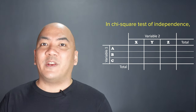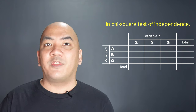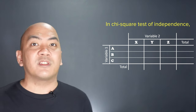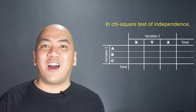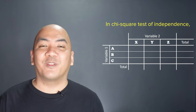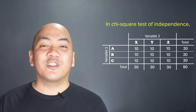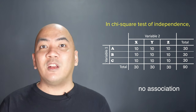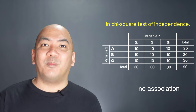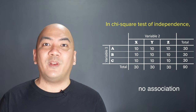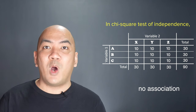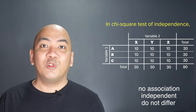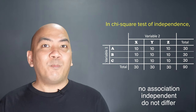Suppose we have two variables — variable 1 and variable 2 — in which both have three possible distinct outcomes. We may summarize it using a 3x3 cross-tabulation. If all the observed counts are equal, say equal to 10, then the proportions are all equal, and we say there is no association between the two variables. Variable 1 and variable 2 are independent, or simply the proportions do not differ, which supports the null hypothesis.